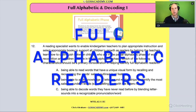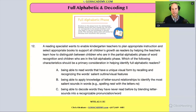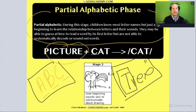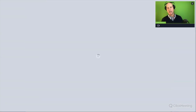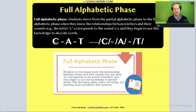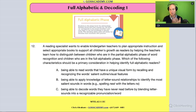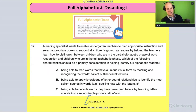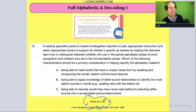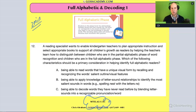Okay team, in this question we're going to look at two groups of students in kindergarten. The first group is at the partial alphabetic stage, and the other group is going to be at a fully alphabetic stage. It's a wordy question from the reading specialist exam, so it's a bit of a push, but a fun push. Take two minutes, read the question, pause, and unpause when you're ready.